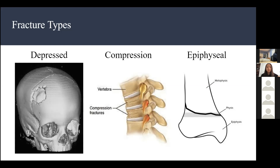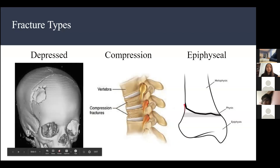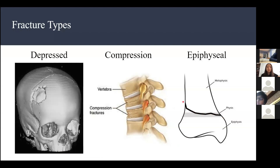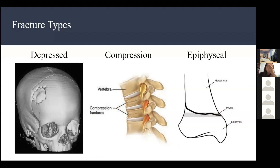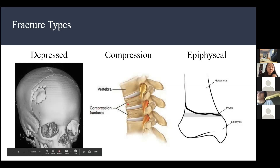To recap: depressed is like impacted but for the skull — a piece of skull breaks and presses inward. Compression is for the spine, where pressure pushes down hard enough to create compression fractures and damage the nerves running through the spine. Epiphyseal is common in children because they have growth at the epiphyseal plate, making that area of bone easier to break.